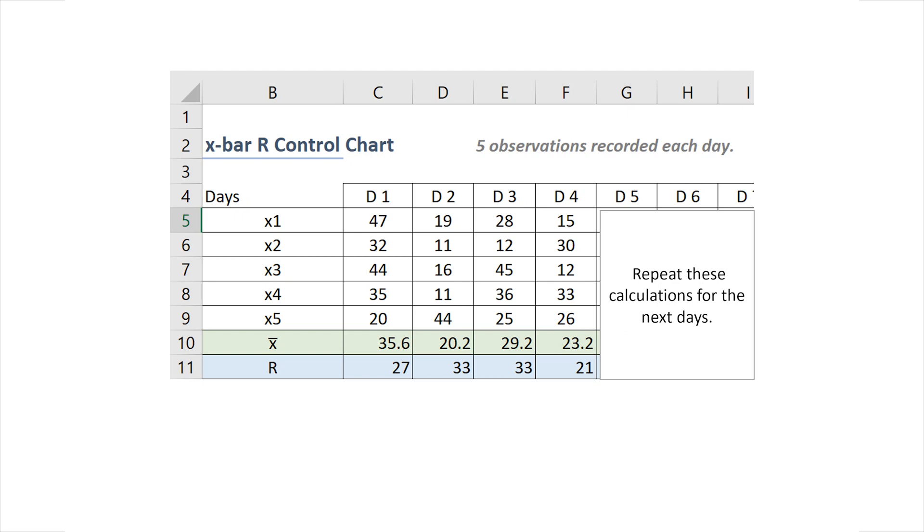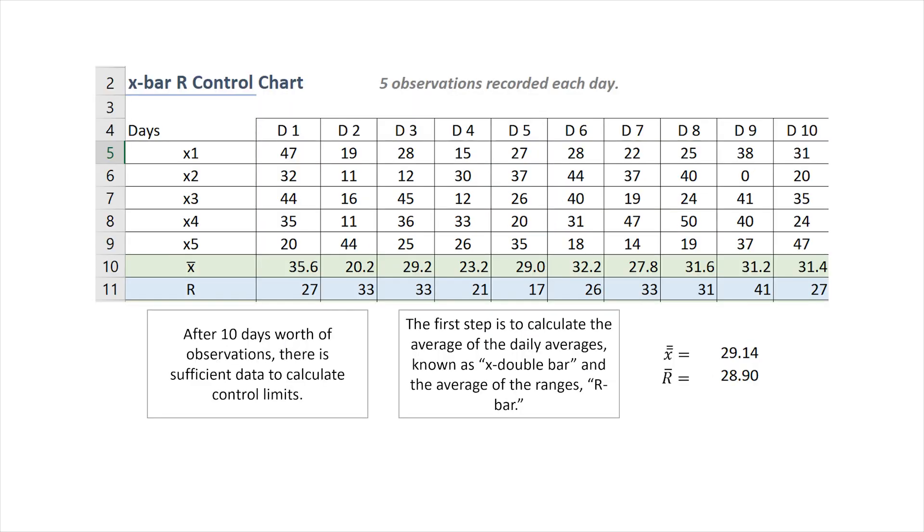We will repeat this sampling of five observations every day and also the calculations for the next days. We will continue sampling and calculating both daily average and daily range for a period of 10 days.